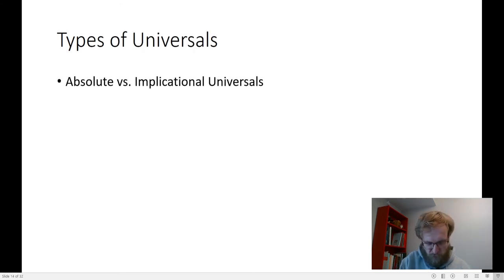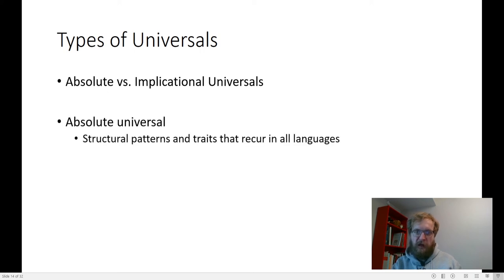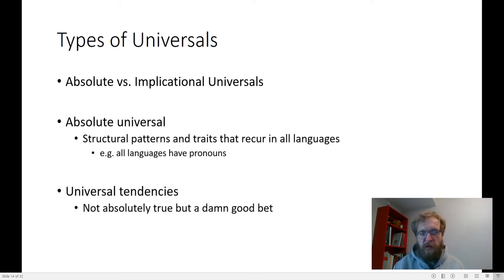One of the most important concepts in typology is the search for absolute versus implicational universals. An absolute universal is just a clear statement that this is the thing that happens in every single language. An implicational universal is something a little more like the if-then statement that we took a look at earlier. In actual practice, we don't find a ton of absolute universals in language, or maybe. We sort of argue about it anyway. But we do see a lot of universal tendencies, something that may not be true 100% of the time, but it's a really, really good bet.